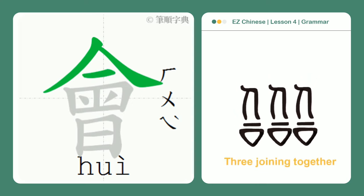In the far past, such meetings involved group activities, such as hunting, and later cooking and sharing the prey.